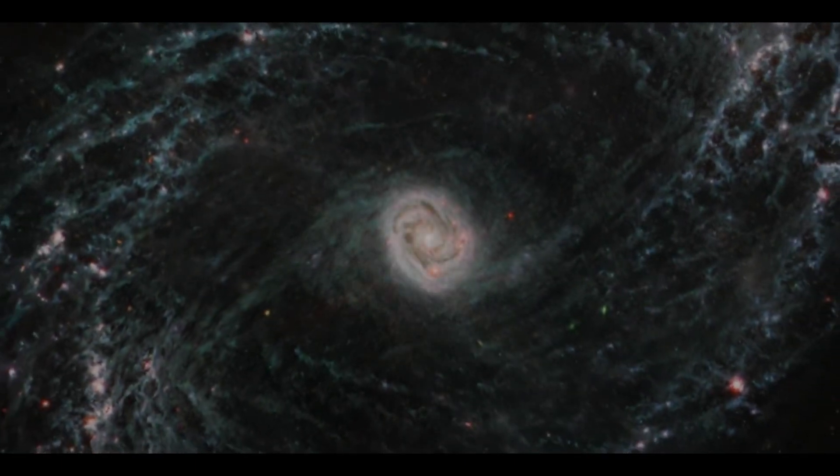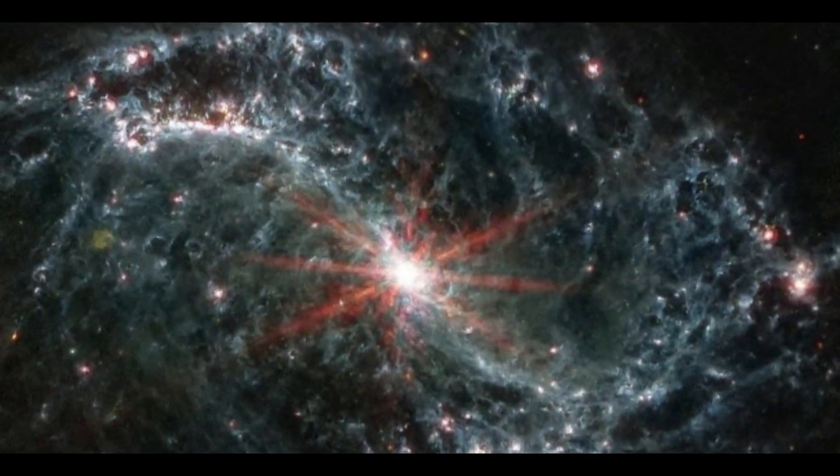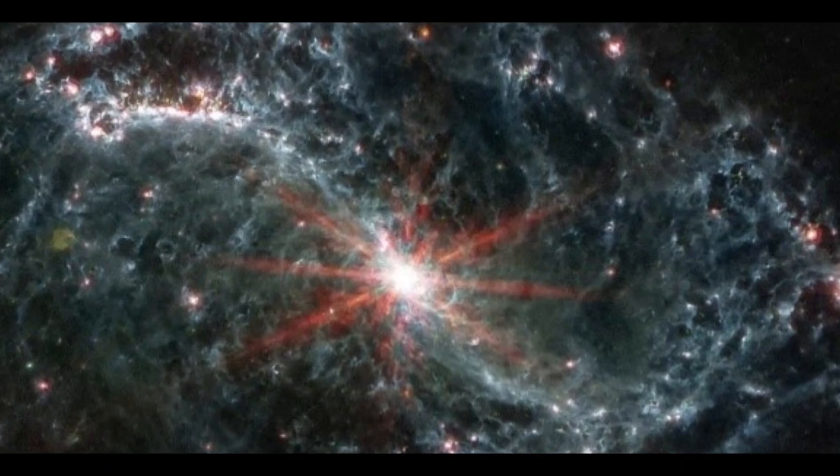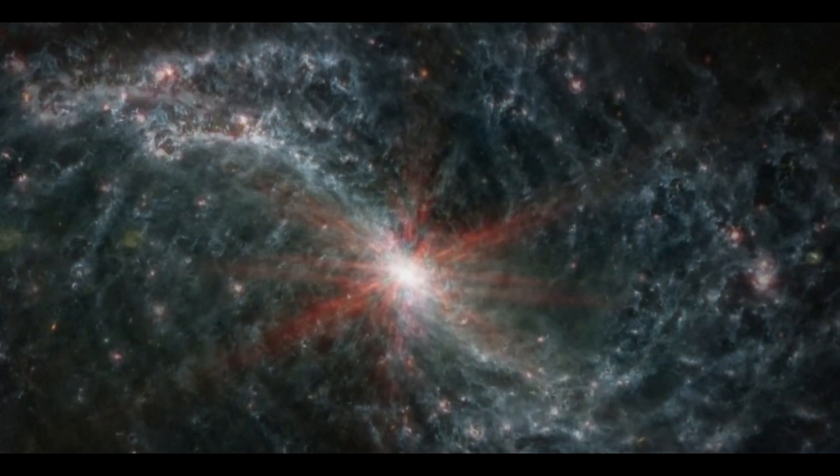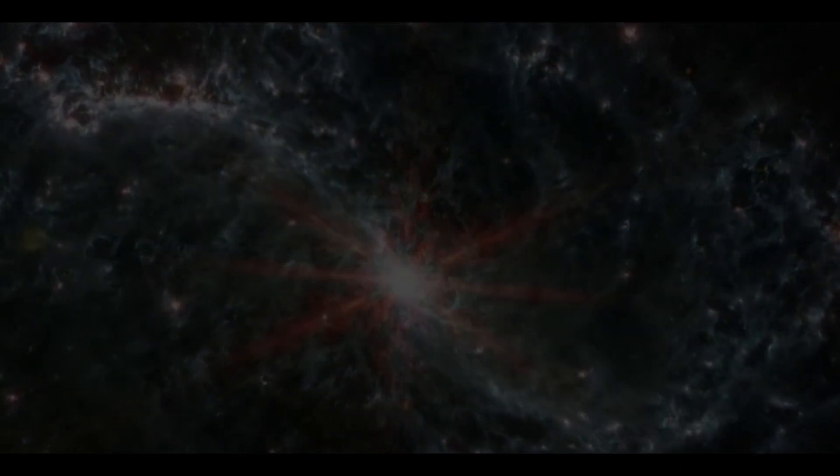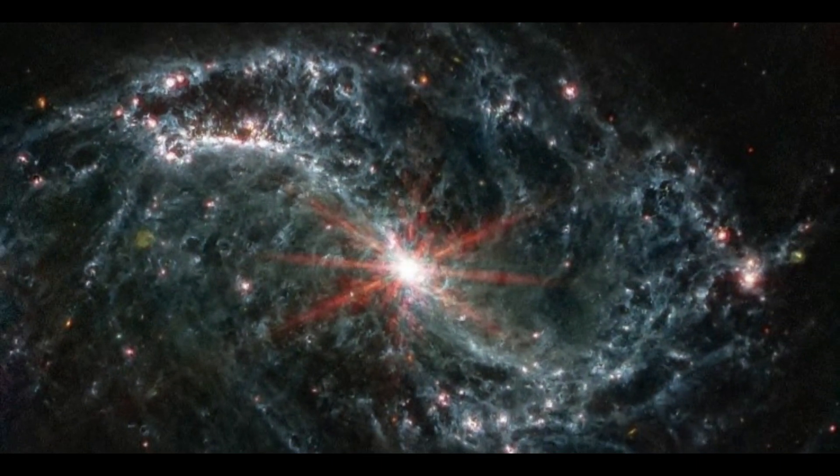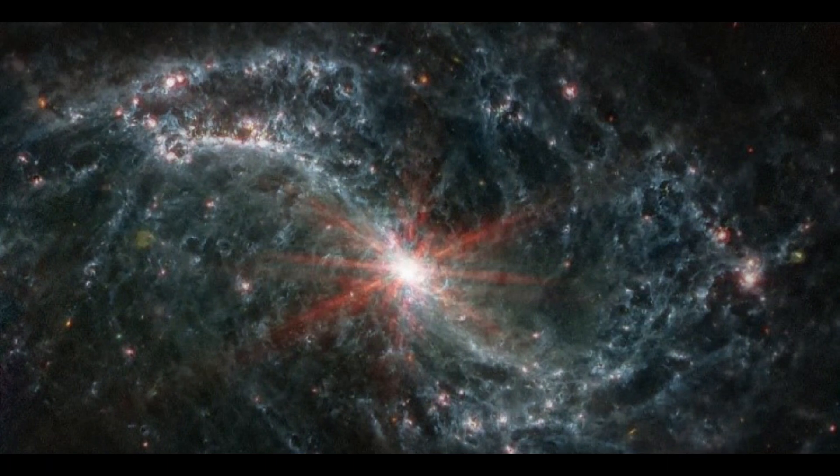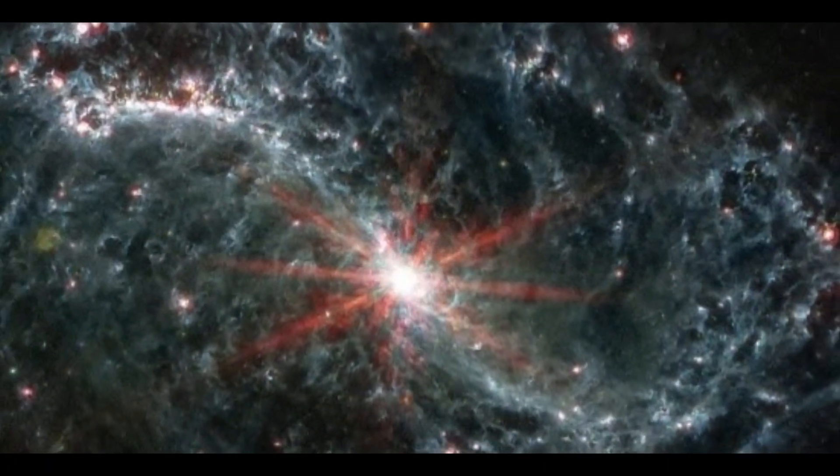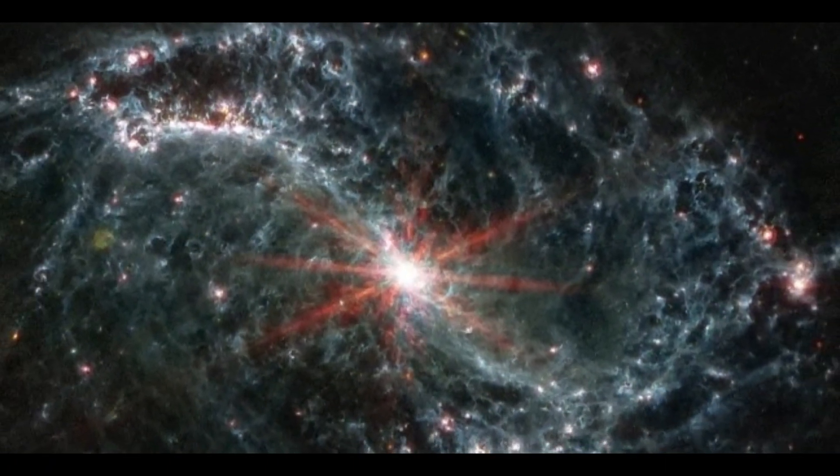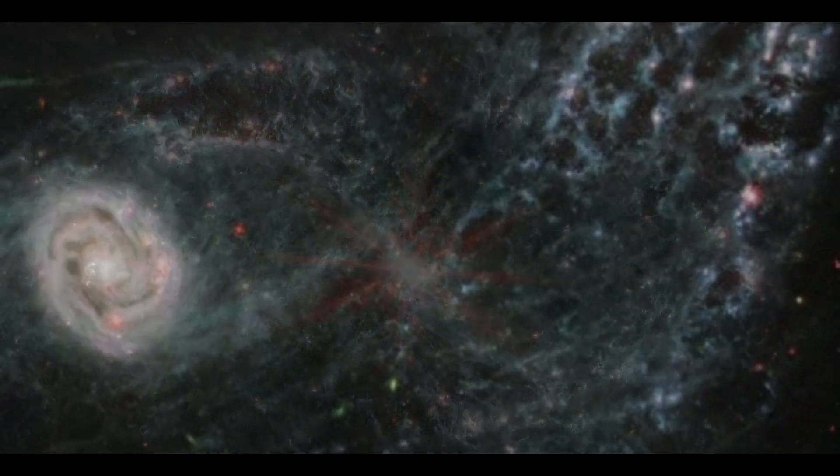The image was captured as part of the Physics at High Angular Resolution in Nearby Galaxies Project, which includes over 100 researchers from around the world. One of the first science programs of the James Webb Space Telescope is to study 19 spiral galaxies using its mid-infrared instrument, which can see through gas and dust clouds that other forms of imaging cannot.